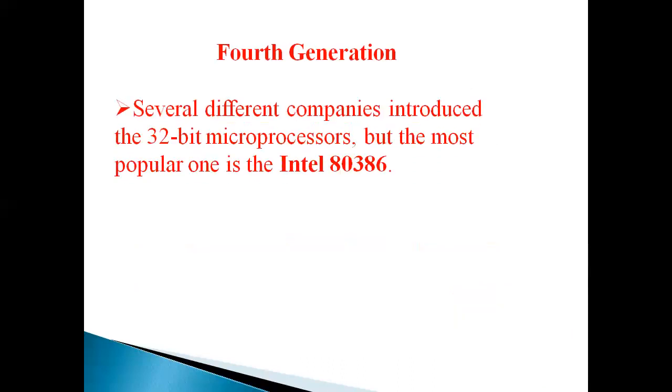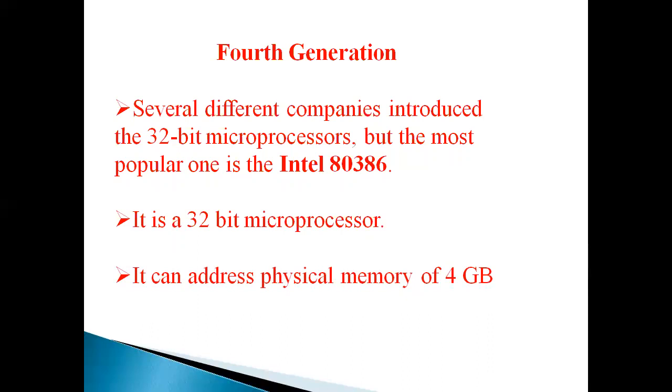Fourth generation: Several different companies introduced the 32-bit microprocessor. But the most popular one is the Intel 80386 microprocessor. It is a 32-bit microprocessor. It can address physical memory of 4 GB. The example of fourth generation is 80386.